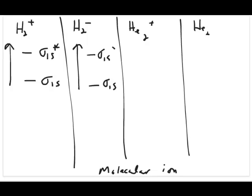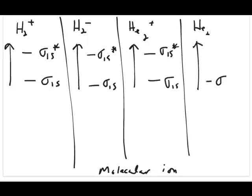I'll fill the electrons accordingly. For H2+, it's H2 with a +1 charge, so only 1 electron. For H2−, it's 3 electrons — 2 from H2 plus 1 for the negative charge. For He2+, each He has 2 valence electrons, giving 4 total minus 1 for the charge, so also 3 electrons. And He2 has 4 electrons.